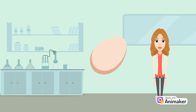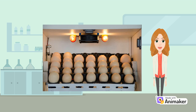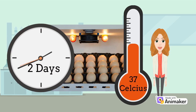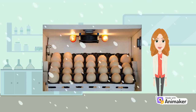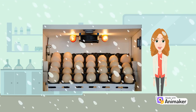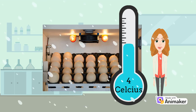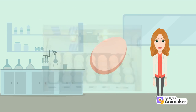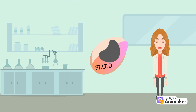Then typically you would incubate that embryonated egg for about 48 hours at 37 degrees. After which point in time, you would move that embryonated egg into a colder environment — so you'd go from 37 degrees, which is quite warm, to four degrees. Moving it from 37 to four, the purpose of that is to actually kill the embryo, so that when you go to harvest the fluid, the embryo is no longer living.